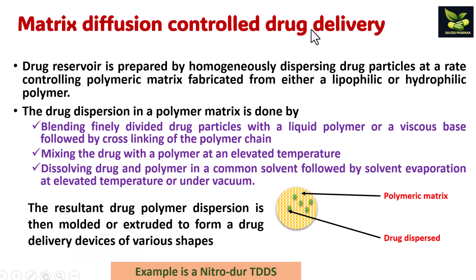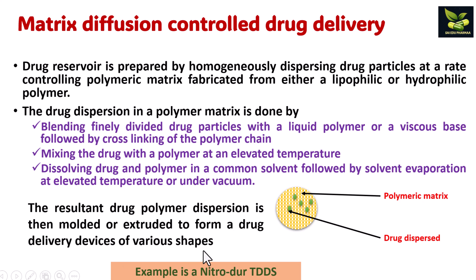Next is matrix diffusion control drug delivery system. The drug reservoir is prepared by homogeneously dispersing drug particles in a rate controlling polymeric matrix fabricated from either a lipophilic or hydrophilic polymer. Drug dispersion can be done by blending finely divided drug particles with a liquid polymer or viscous base followed by cross-linking, or by mixing drug with polymer at elevated temperature, or by dissolving drug and polymer in a common solvent followed by solvent evaporation. The resultant drug-polymer dispersion is molded or extruded to form delivery devices. An example is Nitrodur transdermal drug delivery system.